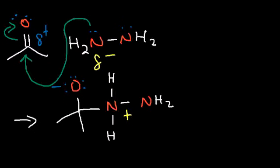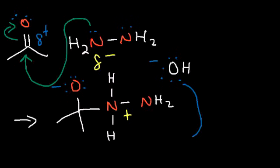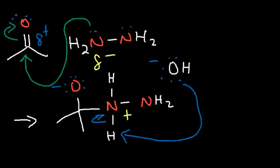Whenever nitrogen has four bonds, it has a positive formal charge. Hydroxide is a strong base and is attracted to the hydrogen attached to the nitrogen because it's now acidic, so we take off one of those hydrogen atoms. Once hydroxide grabs the hydrogen it turns into water. We also need to protonate this oxygen because right now it's a terrible leaving group — our goal is to get rid of oxygen and add hydrogen.